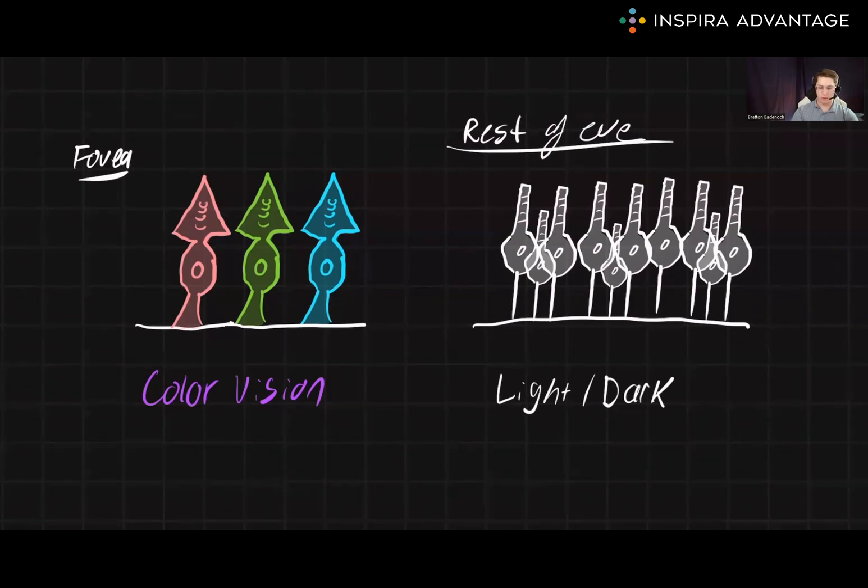Now, this doesn't mean that there aren't rods in the fovea. There just is a higher concentration of cones to rods in the fovea. Likewise, there are some cones in the rest of the eye, just not that many compared to the amount of rods.